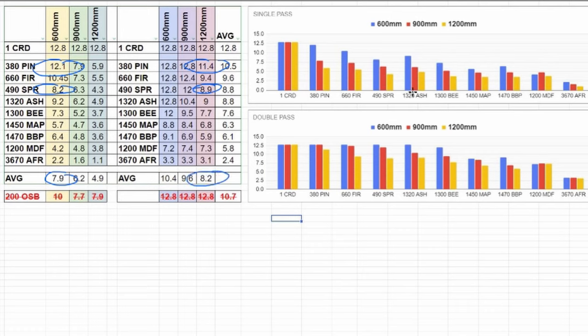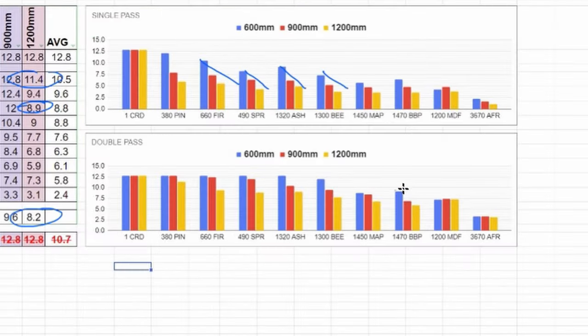With the exception of MDF and African blackwood there's a fairly predictable pattern. Half the speed is close to two times the depth. And it looks like it's going to be possible to cut right through most of these woods. So let's take one of the softest woods and one of the hardest and see what it actually takes to cut through them.